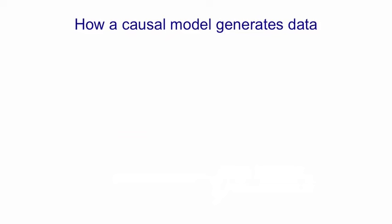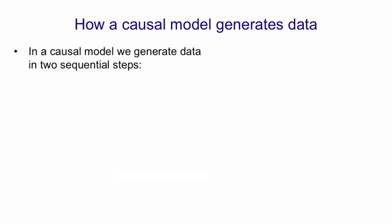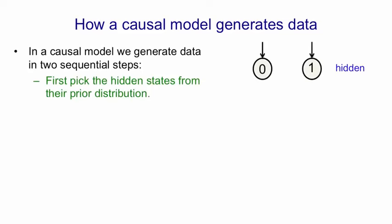Now I want to talk about two ways of producing models of data, in particular of binary vectors. The most natural way to think about generating a binary vector is to first generate the states of some latent variables, and then use the latent variables to generate the binary vector. So in a causal model, we use two sequential steps. These are the latent variables, or hidden units, and we first pick the states of the latent variables from their prior distributions.